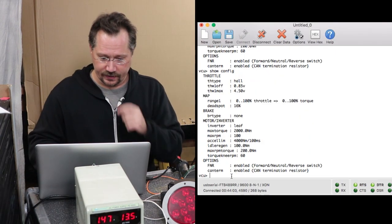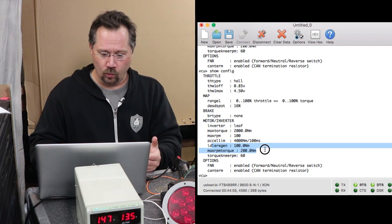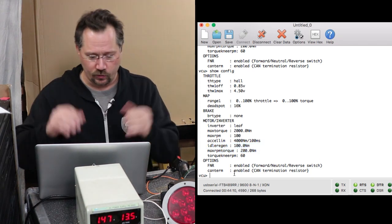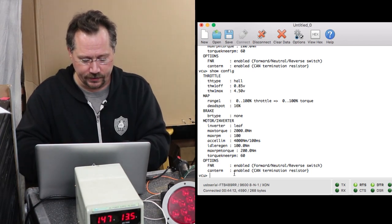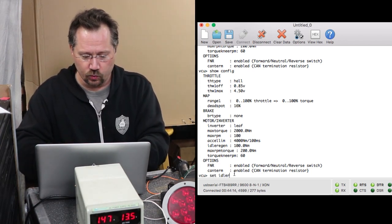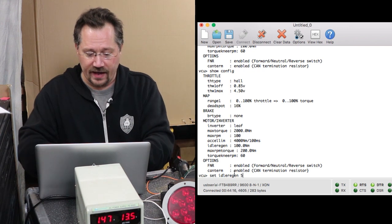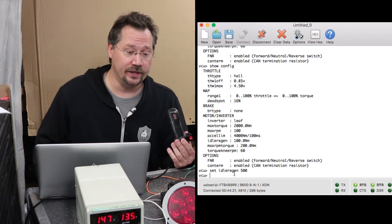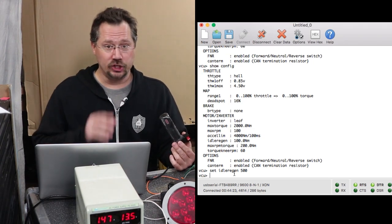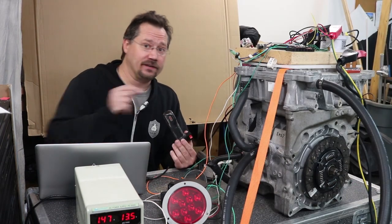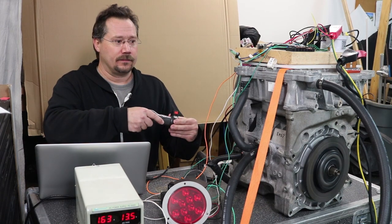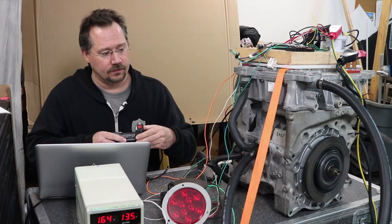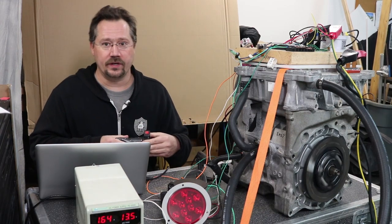100 newton meters on our idle regen. Let's change that. We'll crank it up. We will set idle regen 500 newton meters, which is our maximum. And this time, I'm going to give it a good twist and I'm going to let go. And that should activate the relay and activate our brake light.